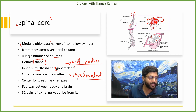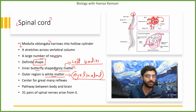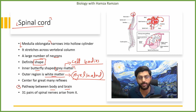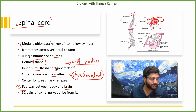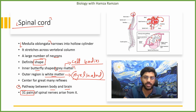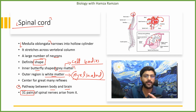The white matter is made of myelinated neurons. The reflexes are controlled by the spinal cord. The main purpose is to make a connection between the body and the brain. The 31 pairs of nerves arise from the spinal cord. The total number of vertebrae is 33.